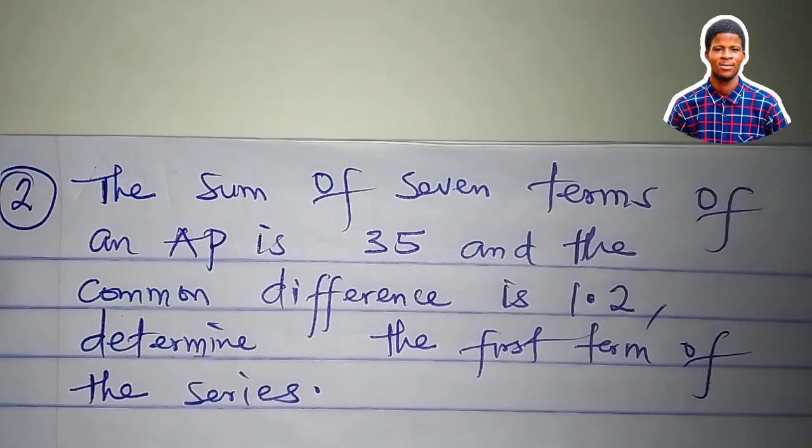This question says that the sum of 7 terms of an AP is 35, and the common difference is 1.2. We are asked to determine the first term of the series.